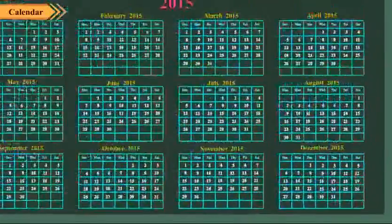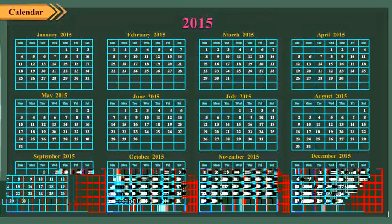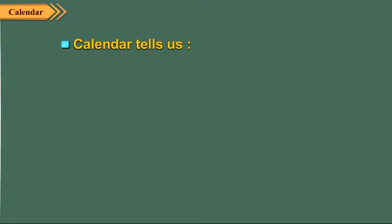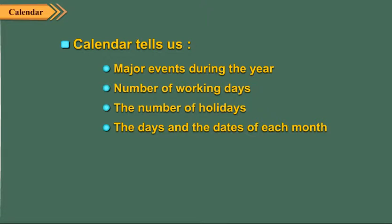Children, a calendar tells us the major events during the year, number of working days, number of holidays, and the days and dates of each month.